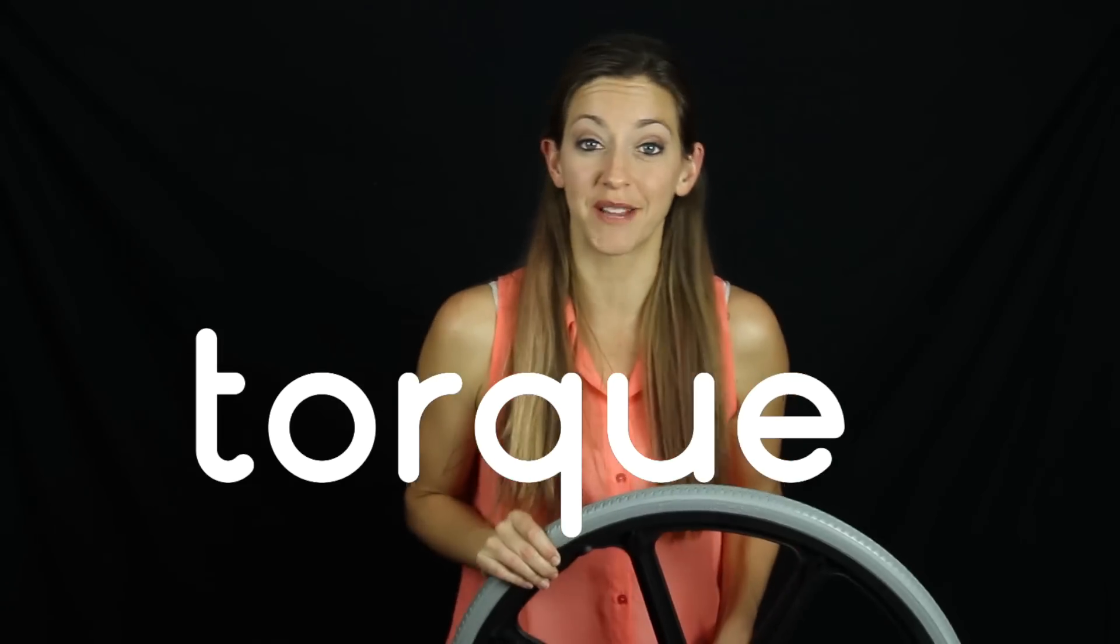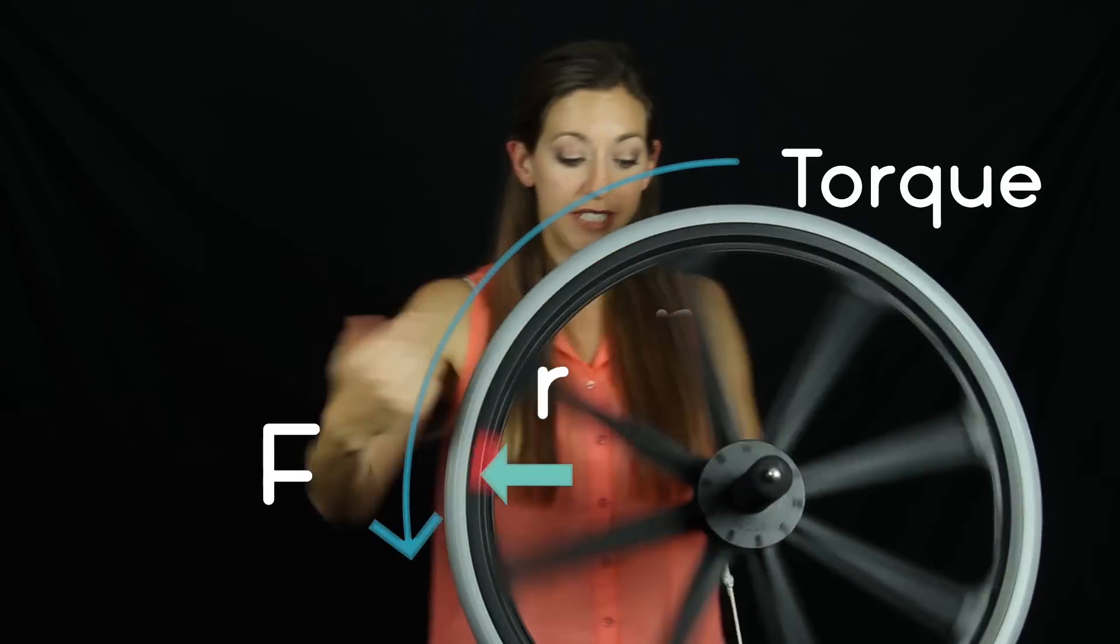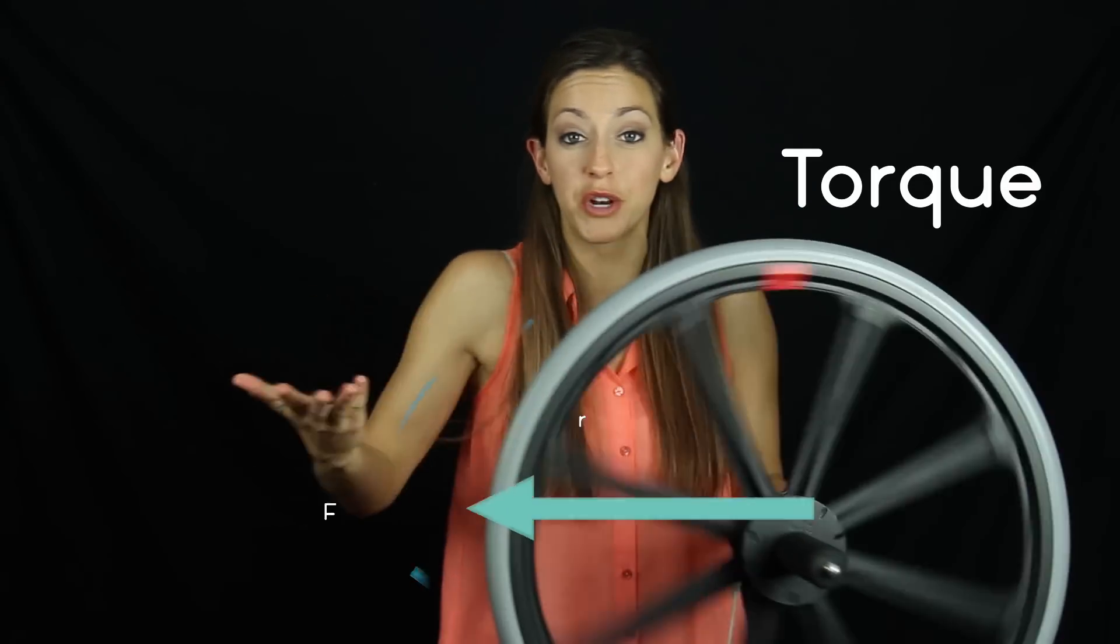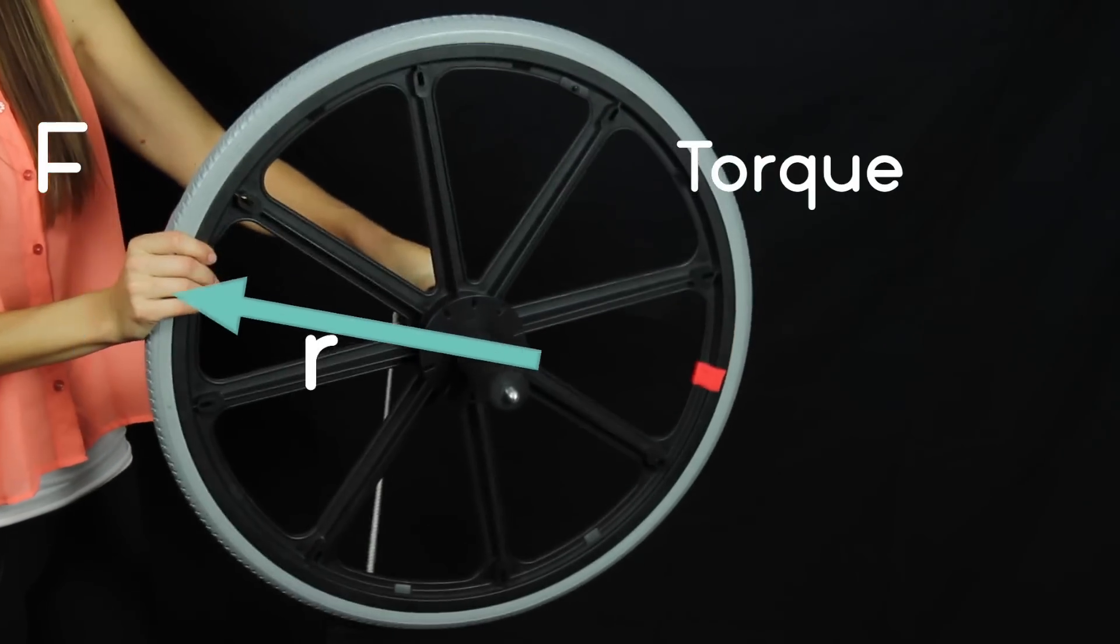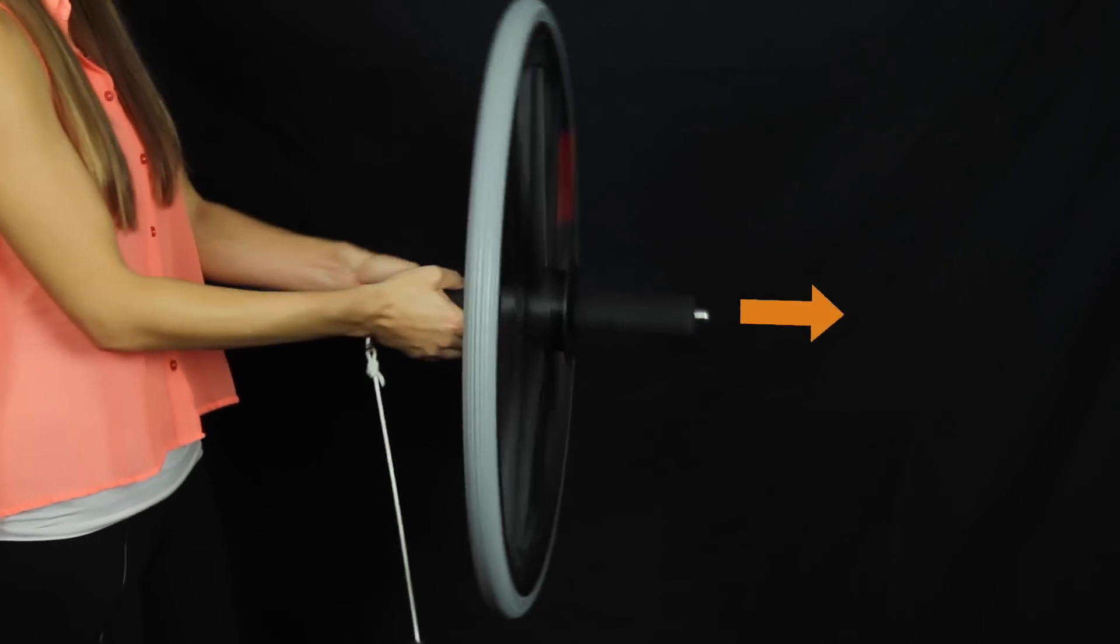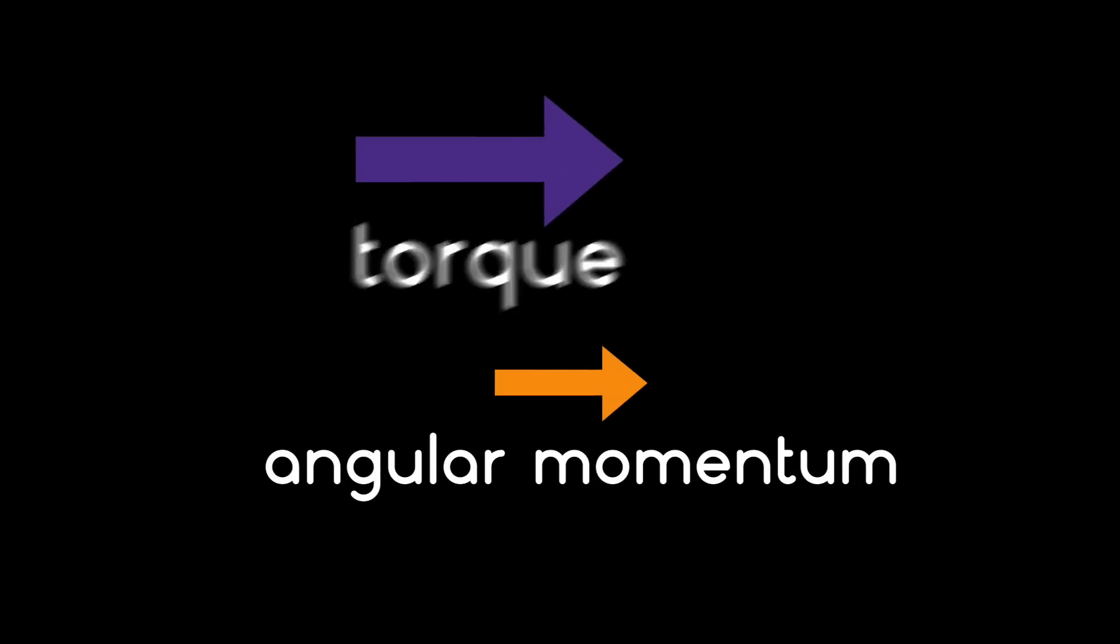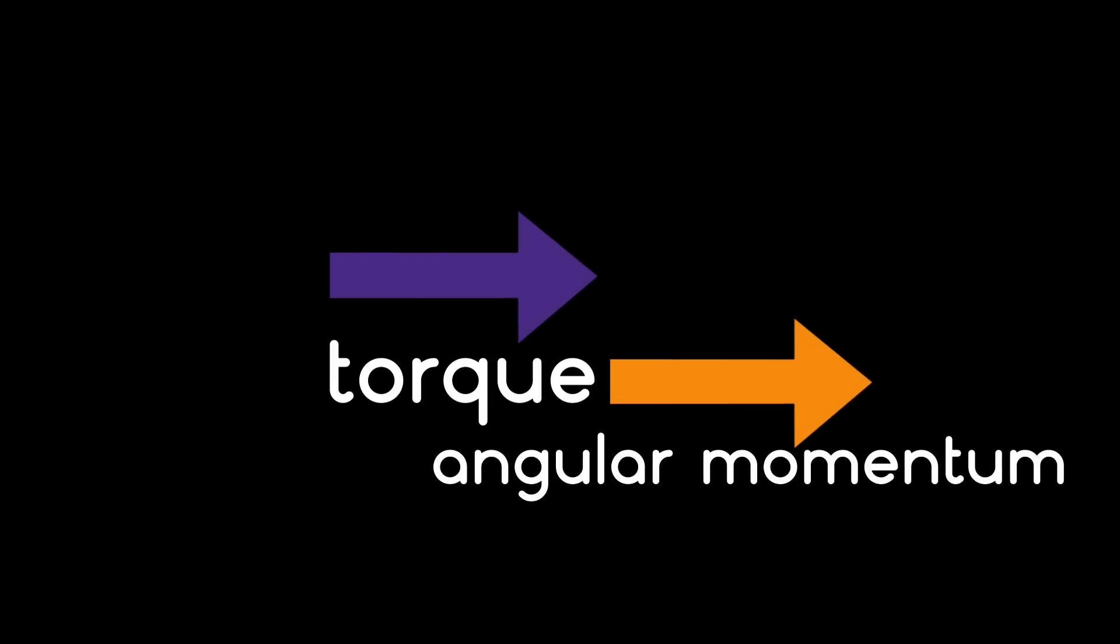When you apply a torque to something, that is a force some distance away from whatever you're going to rotate that thing about, it can make it spin faster or slower, or change the direction it's spinning. Put simply, torque wants to increase angular momentum in the direction of that torque. Watch this.